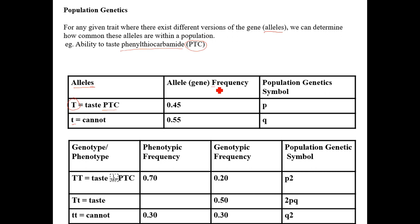In population genetics we often deal with frequencies rather than fractions, ratios, or percentages — though you can multiply a frequency by 100% to convert it to a percentage. In this population, the dominant allele makes up 45% of alleles (frequency 0.45), and the remaining 0.55 — or 55% — is the recessive allele. Since there are only two possible alleles, they must add up to 1, or 100%.